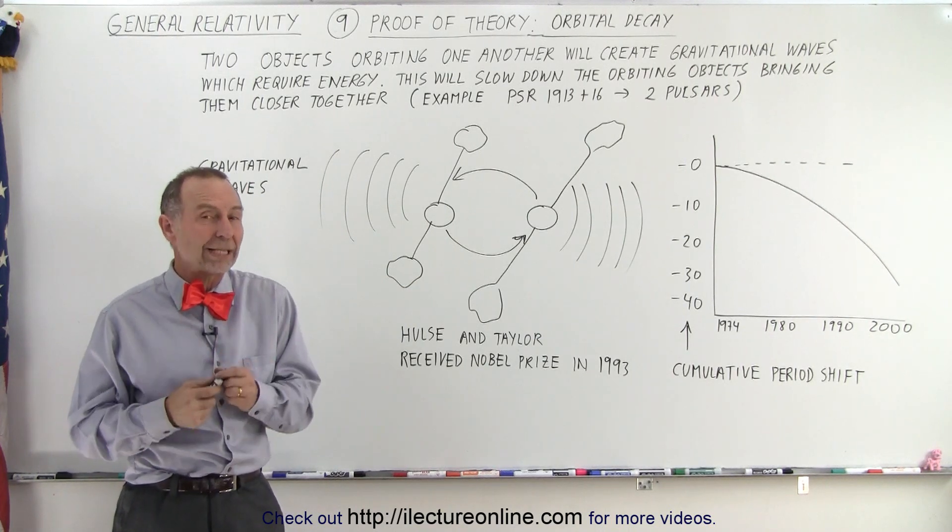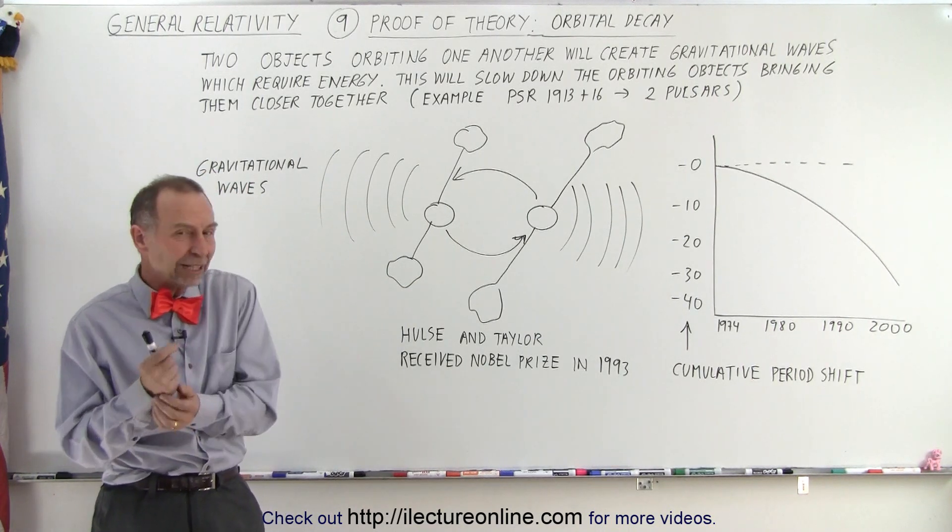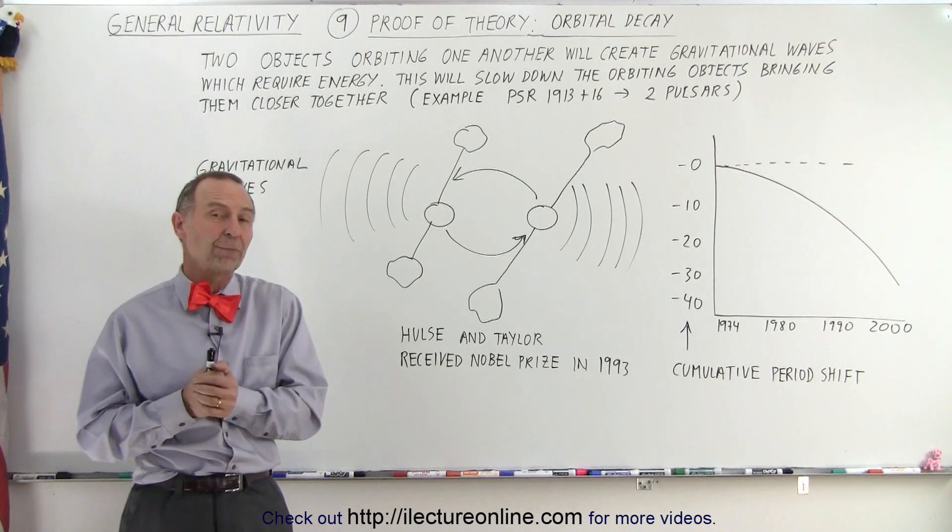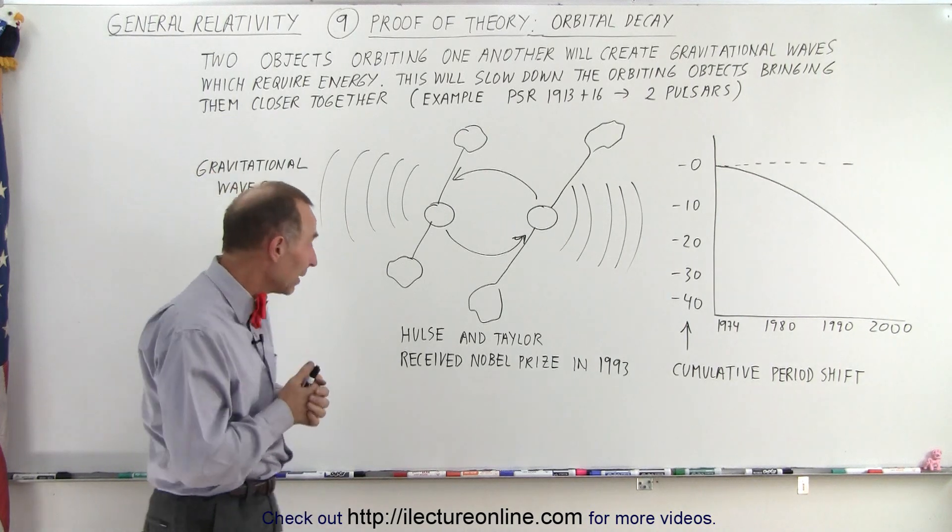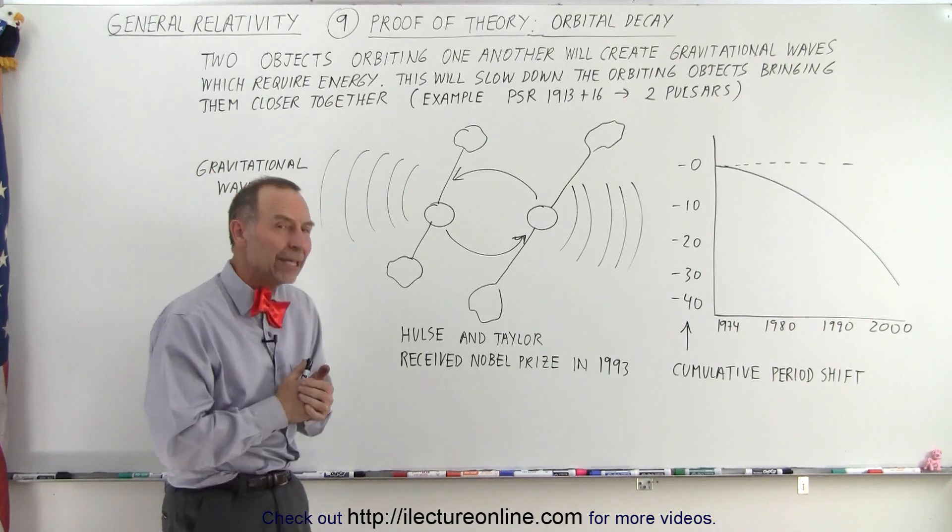Is there a way in which we can show that to be the case? The answer was yes, if at least one of them was a pulsar. One such system was discovered back in 1974 by Hulse and Taylor.